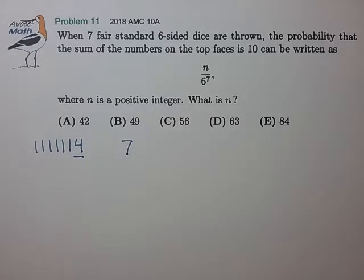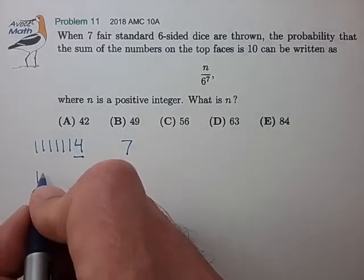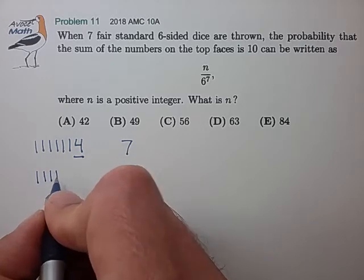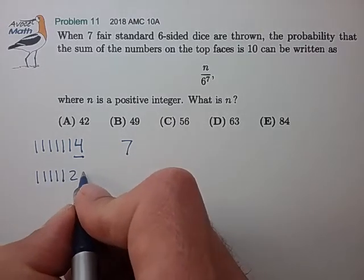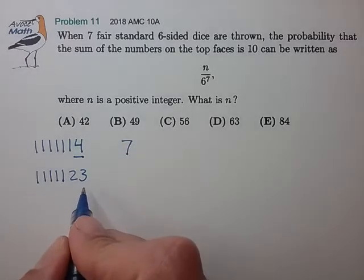Okay, let's think of another configuration. What if we had 5 of the die show up with the value of 1, and then a 2 and a 3? So again, that adds up to 10.